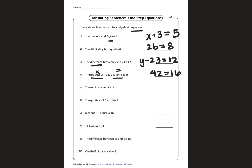The total of m and 3 is 21. Total indicates addition, and 'is' indicates equals. So m plus 3 is equal to 21.